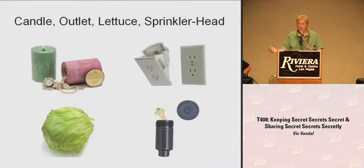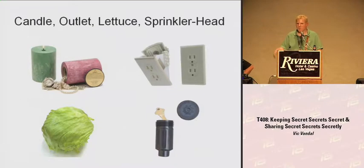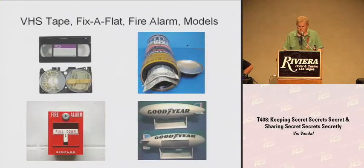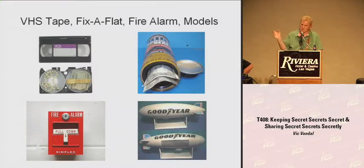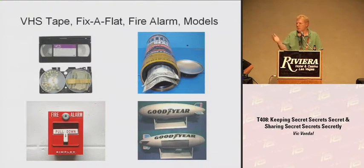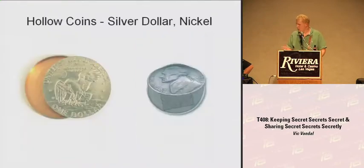Inside a candle. Inside an electric outlet — who's going to look there? The sprinkler head: if you have a sprinkler system, who's going to walk around popping every sprinkler? People see a sprinkler head and think it's just a sprinkler system. Fix-a-flat. This fire alarm is kind of my own — I actually got a fire alarm, gutted it, and you can use two-way tape and stick it anywhere. People think it's a fire alarm but really you've stashed something. Hollow coins — I have a hollow silver dollar. Same weight, no one can tell the difference. You can store small things like microfilm in there. That fake nickel actually has a cipher in it.